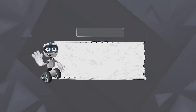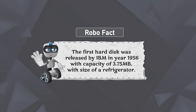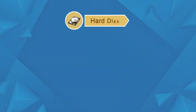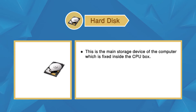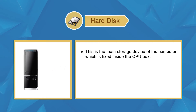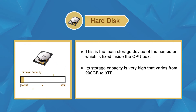Robo Fact: The first hard disk was released in 1956. Its capacity was 3.75 MB and it was as large as a refrigerator. Hard disk is the main storage device which is fixed inside the CPU box. Its storage capacity is very high, ranging from 200 GB to 3 TB. It is not a portable device.